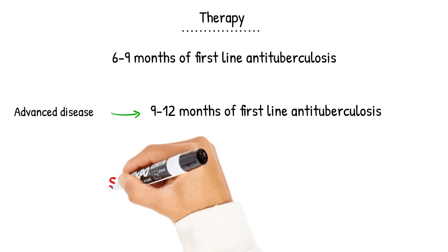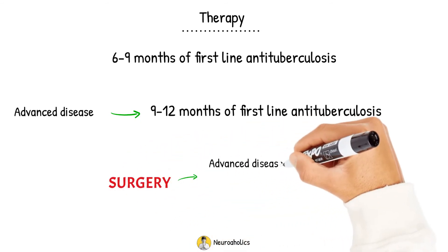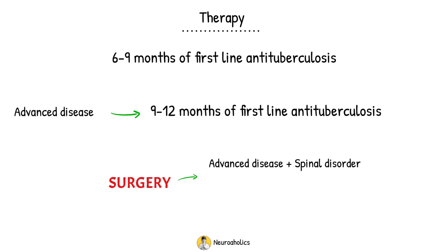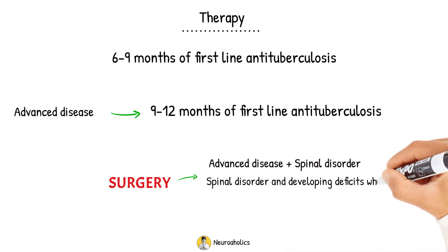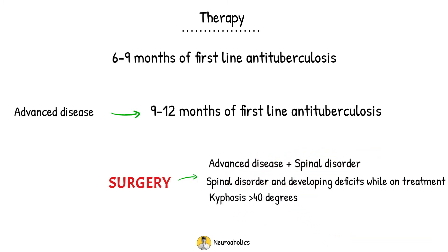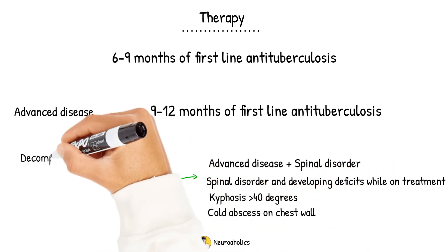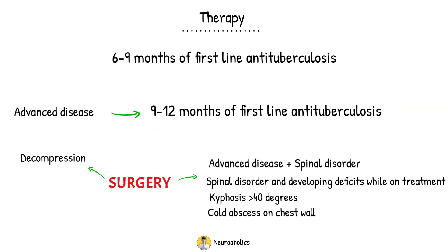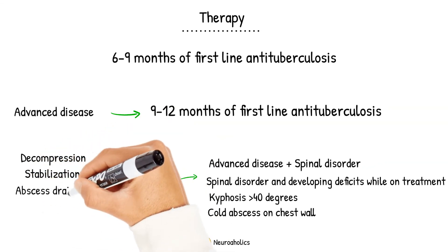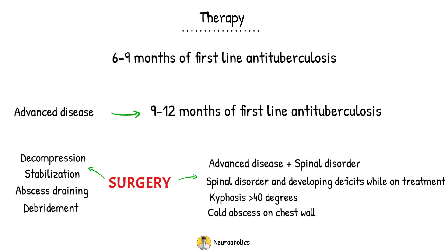Patients require surgical intervention for advanced developmental deficits and spinal disorders, for spinal disease with deteriorating developmental deficits despite adequate treatment, for spinal disorder with kyphosis of more than 40 degrees at the time of diagnosis, or for a cold abscess on the chest wall. Surgical interventions include decompression, the use of hardware for spine stabilization, abscess draining, or debridement of contaminated substances.